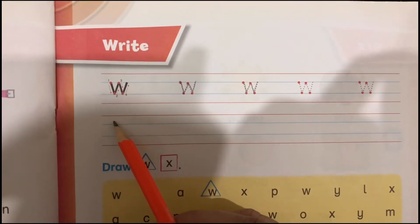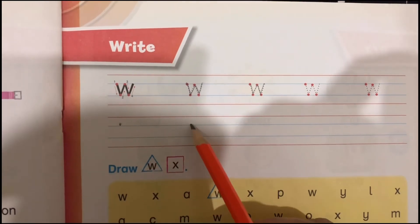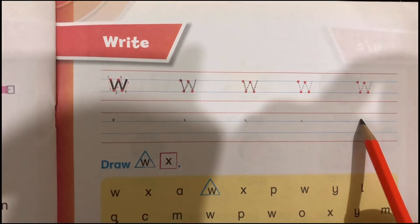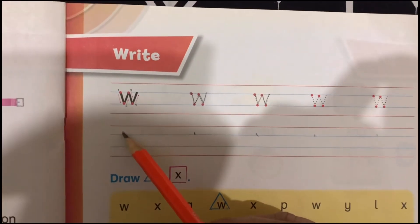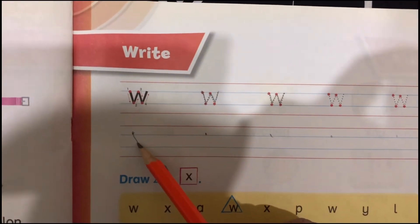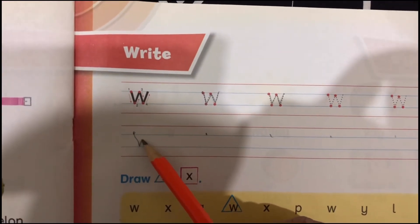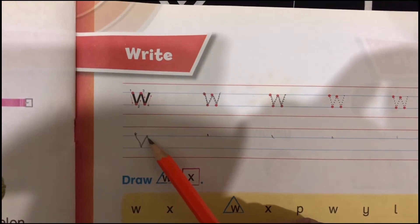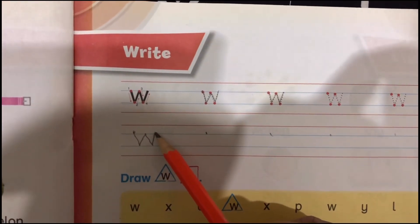Here you are going to write down yourself. Independent writing, okay? From here, you are going down, slant line, touch this line, go up, go down, and go up. Can you see?